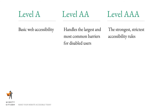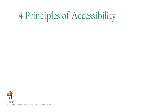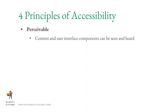The WCAG standards are organized around four main principles of accessibility that make up the foundation for anyone to access and use web content. The first principle is perceivable — content and user interface components must be able to be seen and heard. Your website's content can't be invisible to all senses, so you can't exclude someone because they may be blind or have a hearing impairment.